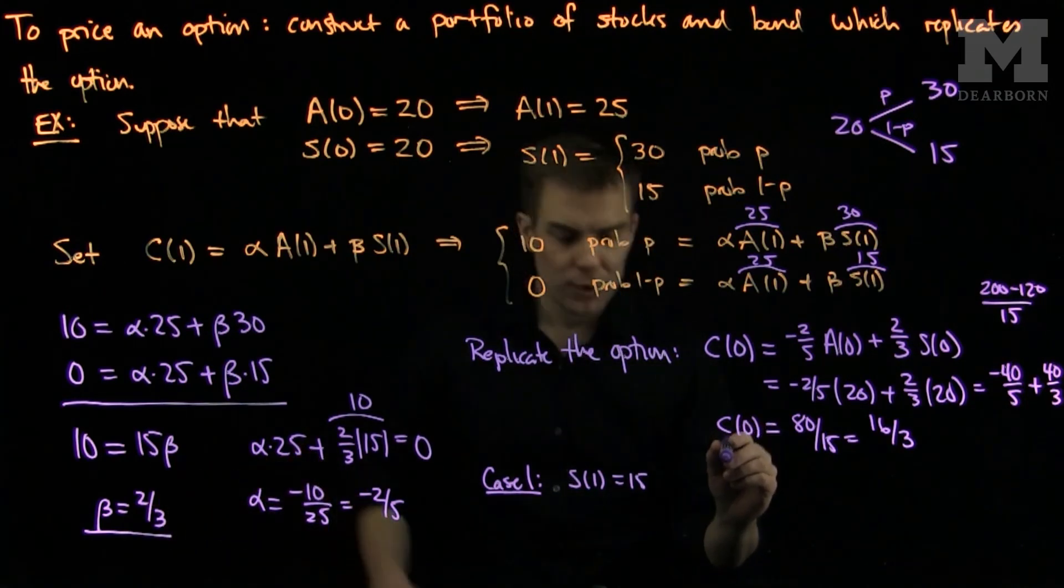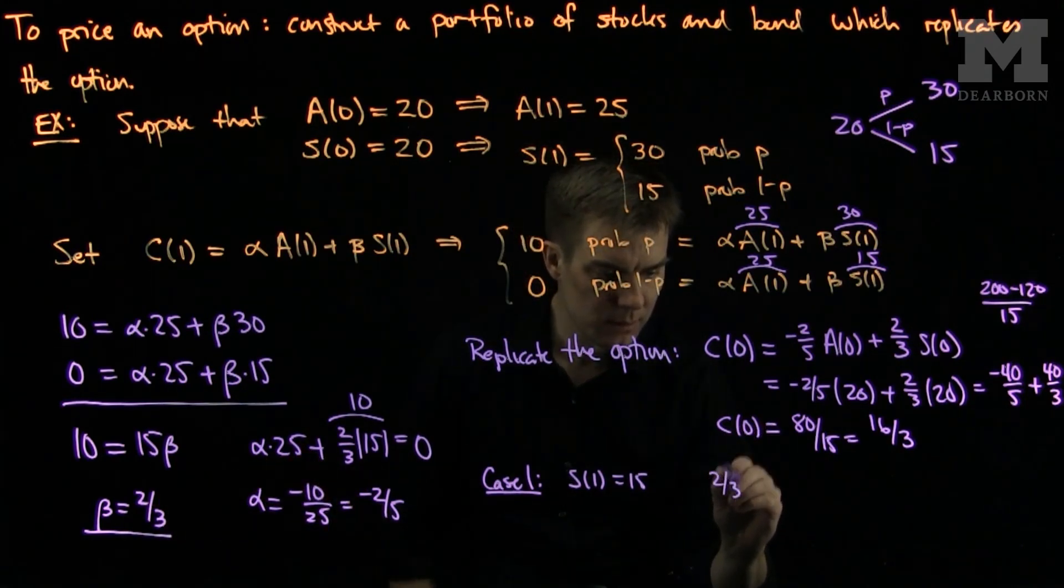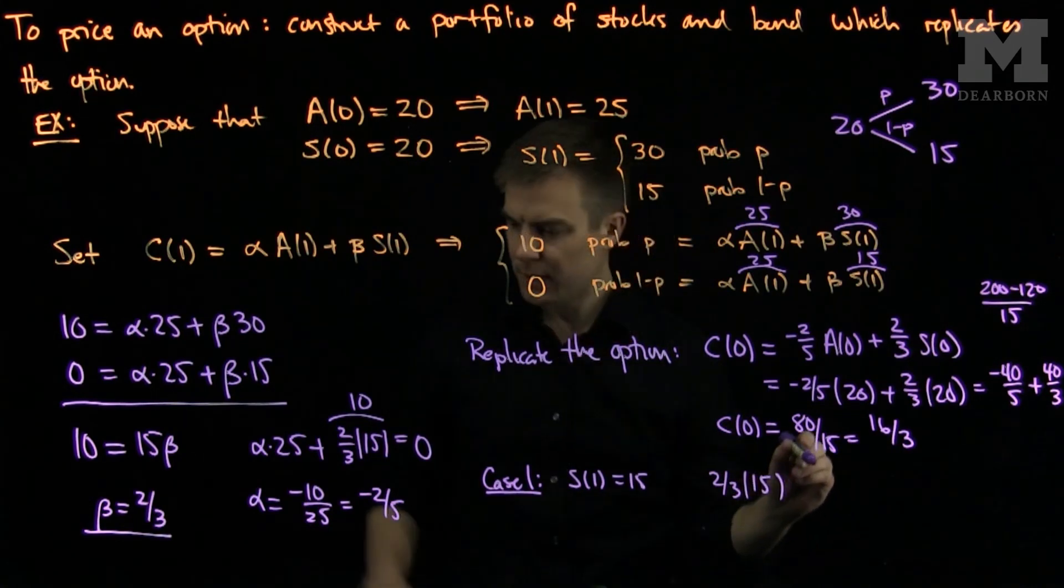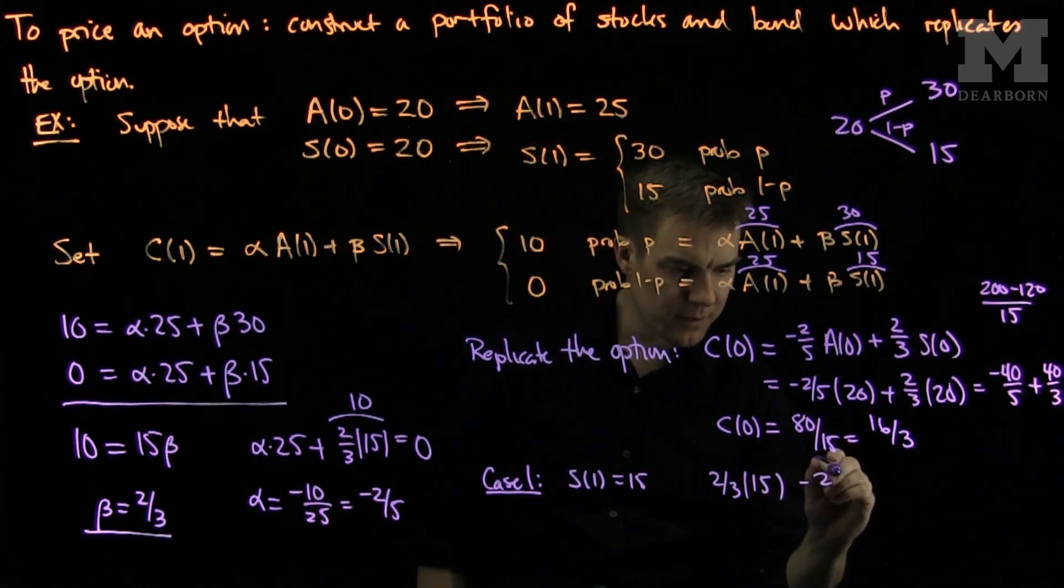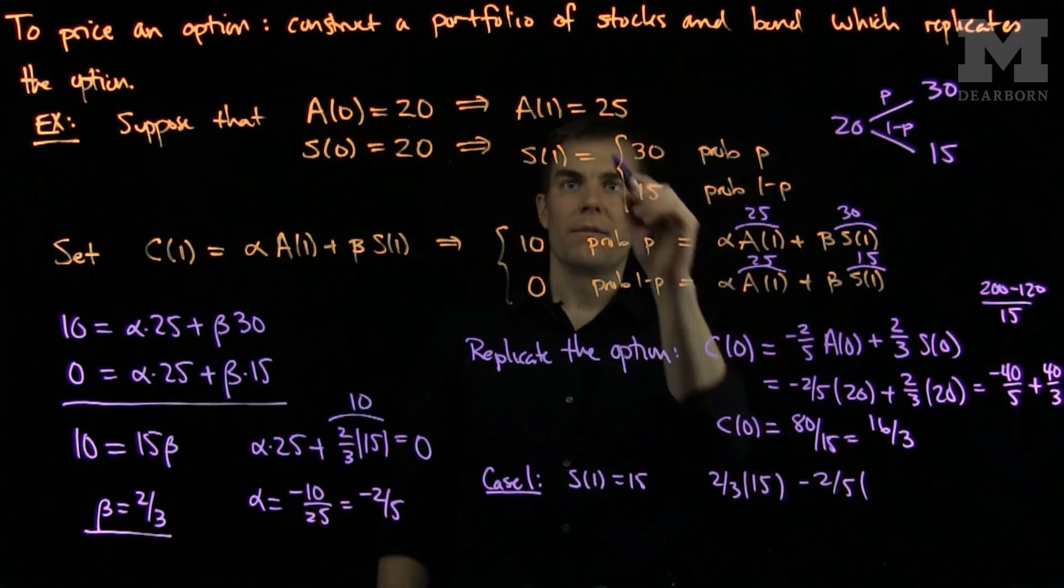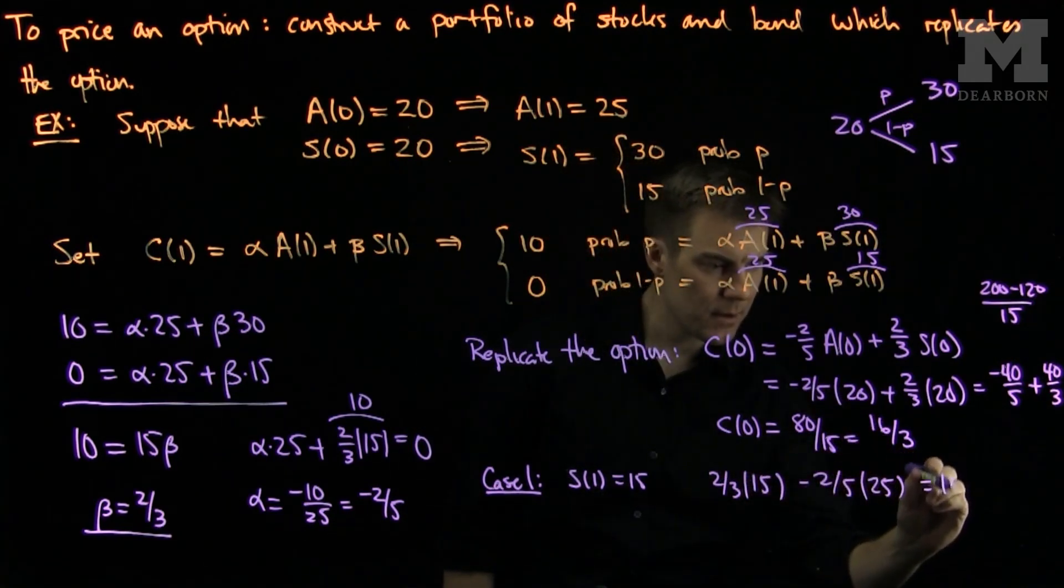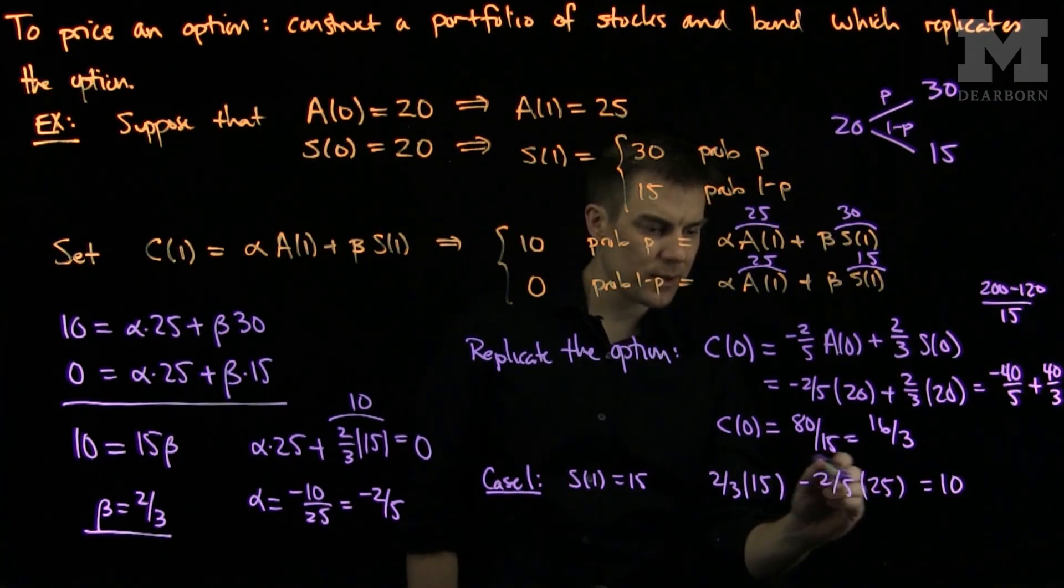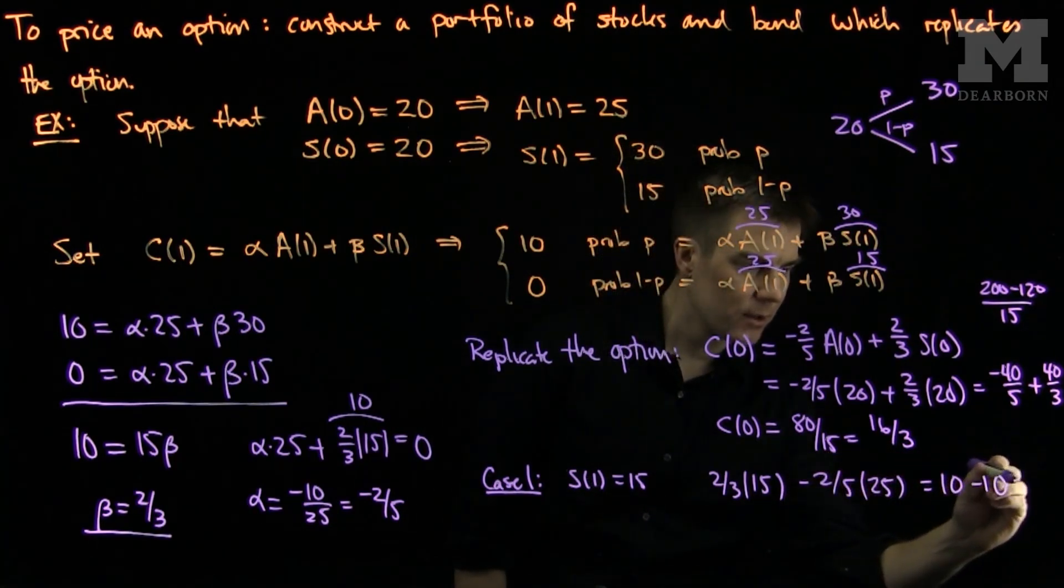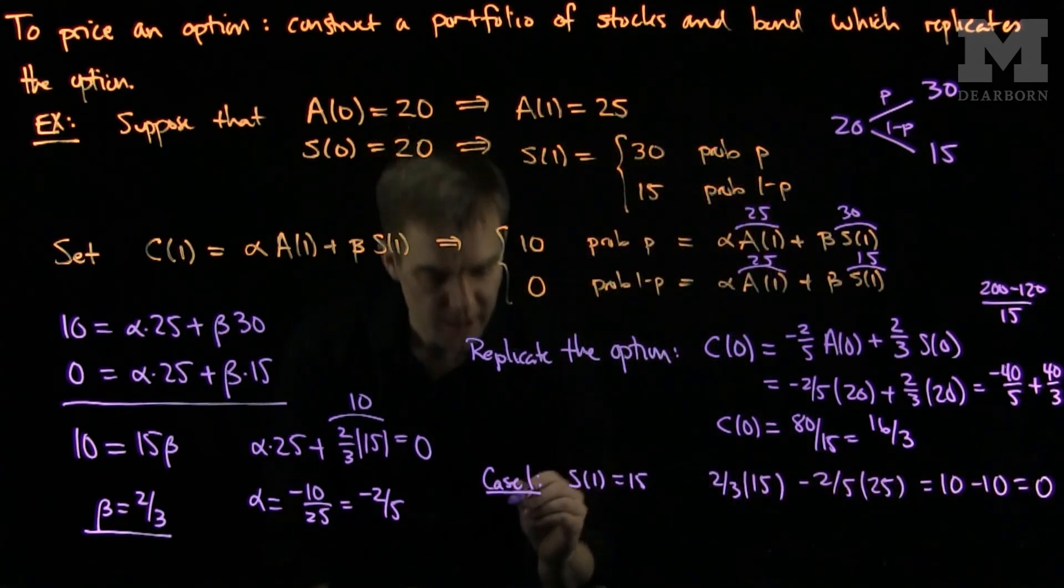we will have 2/3 of 15 minus 2/5 of the final price, 25. And we'll see 2/3 of 15 is 10. And negative 2/5 times 25 is negative 10. So we will get 0.